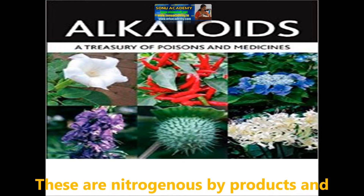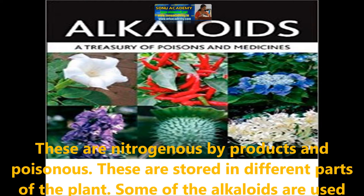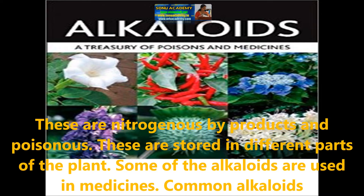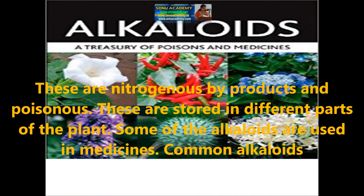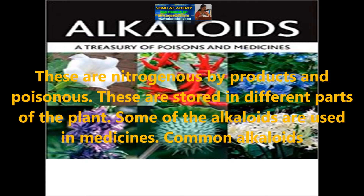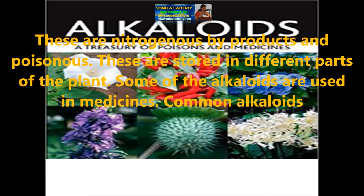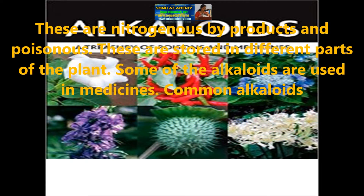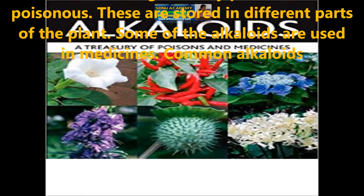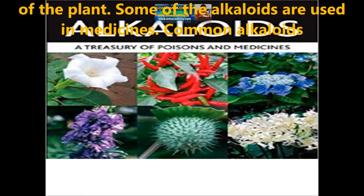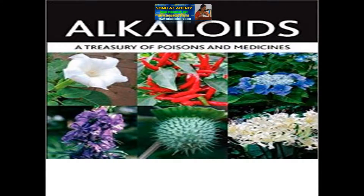Let us see what are alkaloids. Alkaloids are nitrogenous byproducts and are poisonous. These are stored in different parts of the plant. Some of the alkaloids are used in medicines. Let us look at common alkaloids, the plants they come from, and the parts in which they occur in the given table.